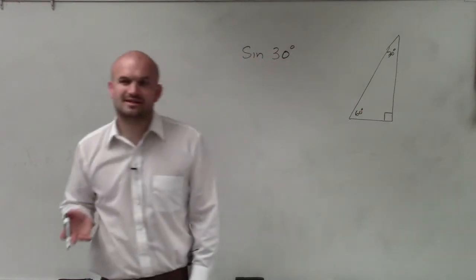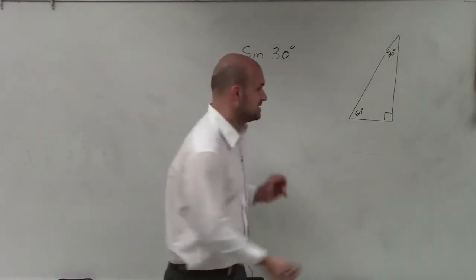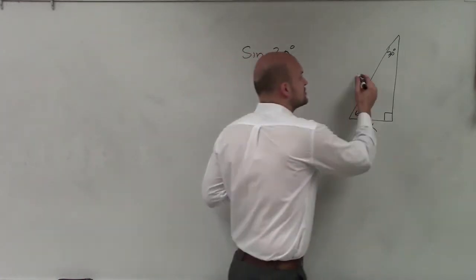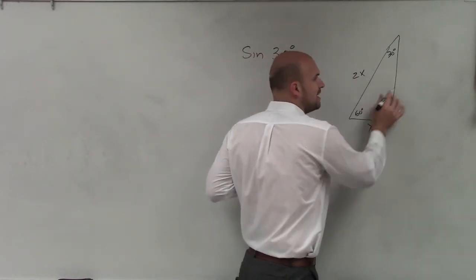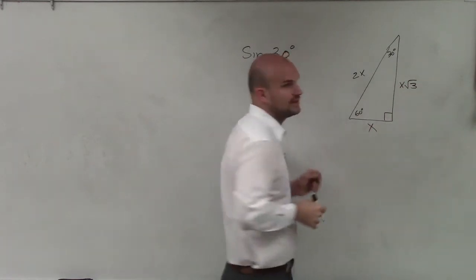And one thing that I didn't go over with you, so I'm glad you guys brought this up, but we've talked about the relationships. If you know this is going to be x, then the hypotenuse is going to be 2x, and then our long leg is going to be x times the square root of 3.